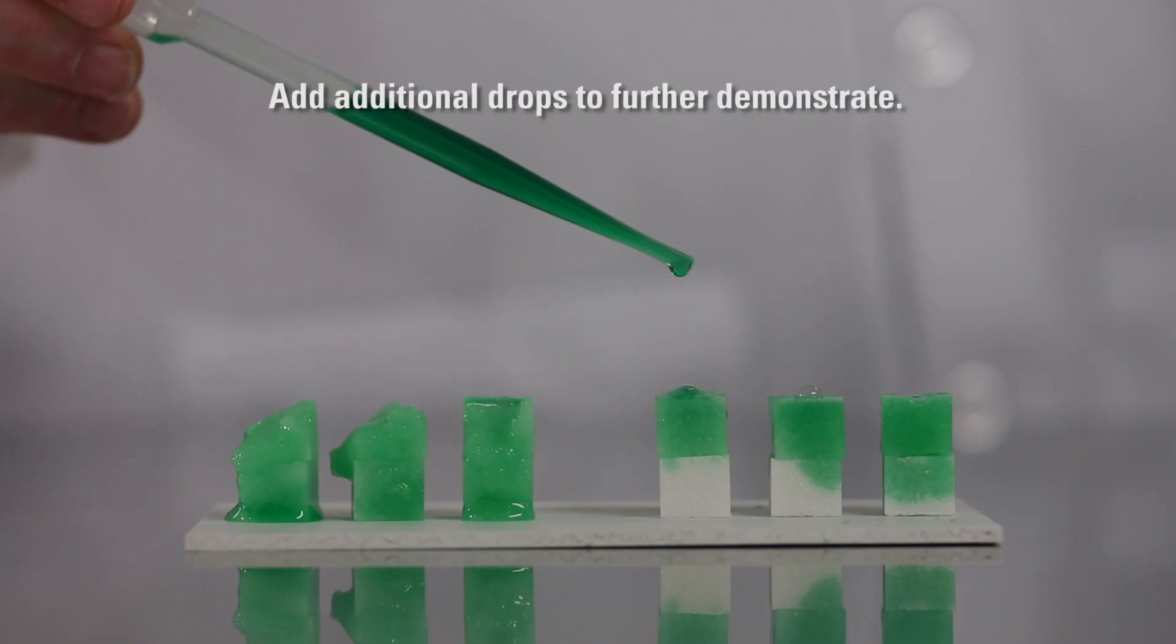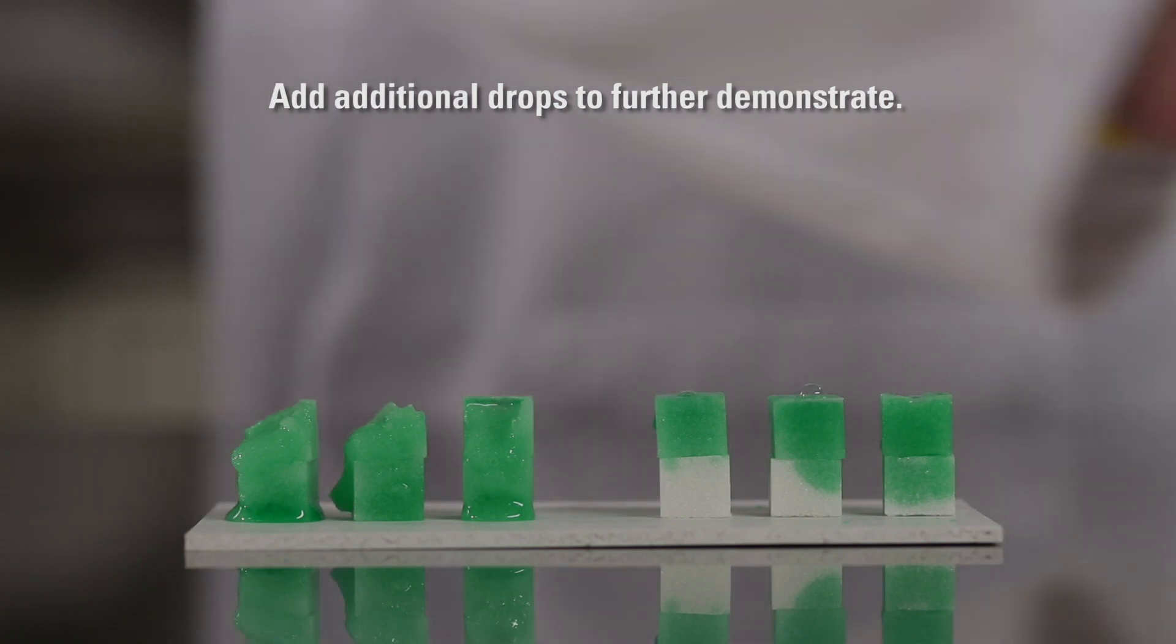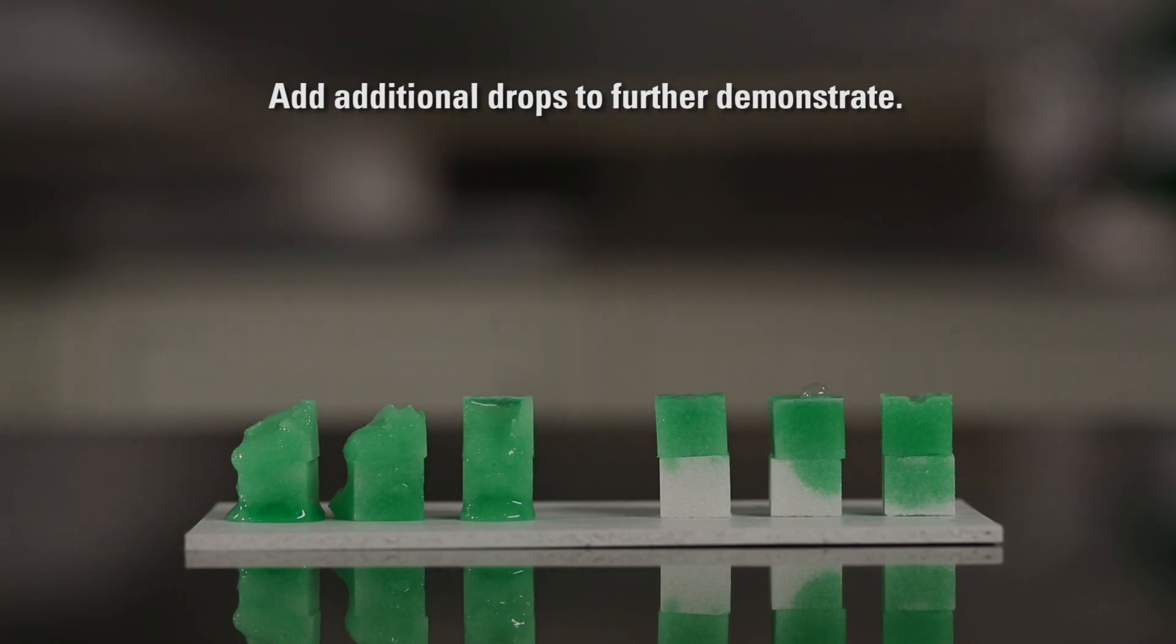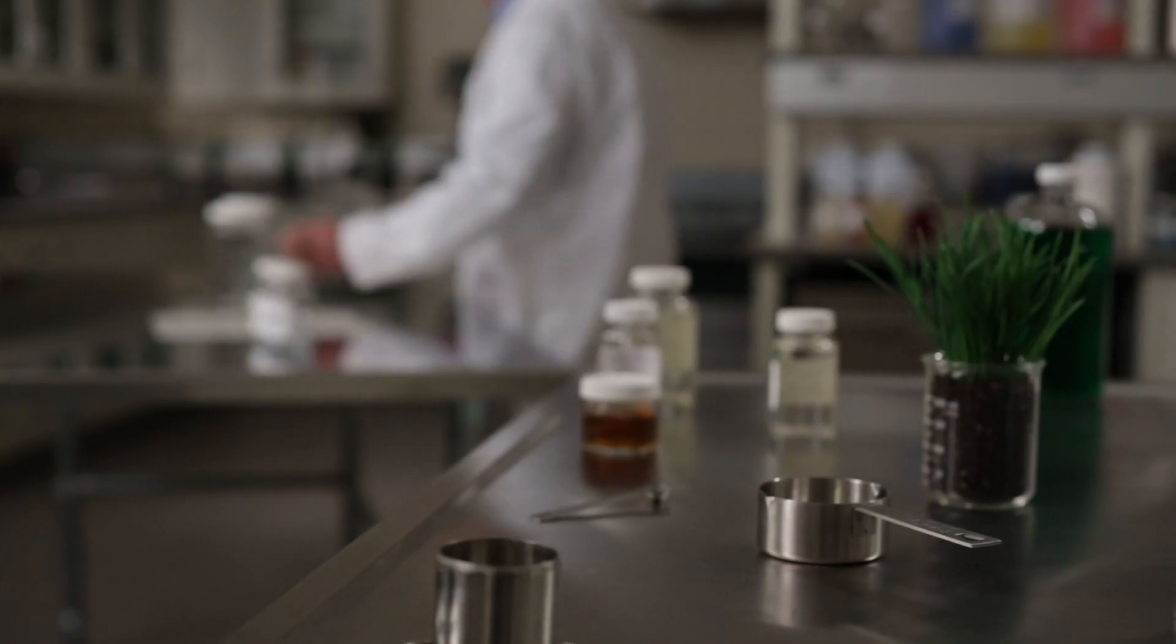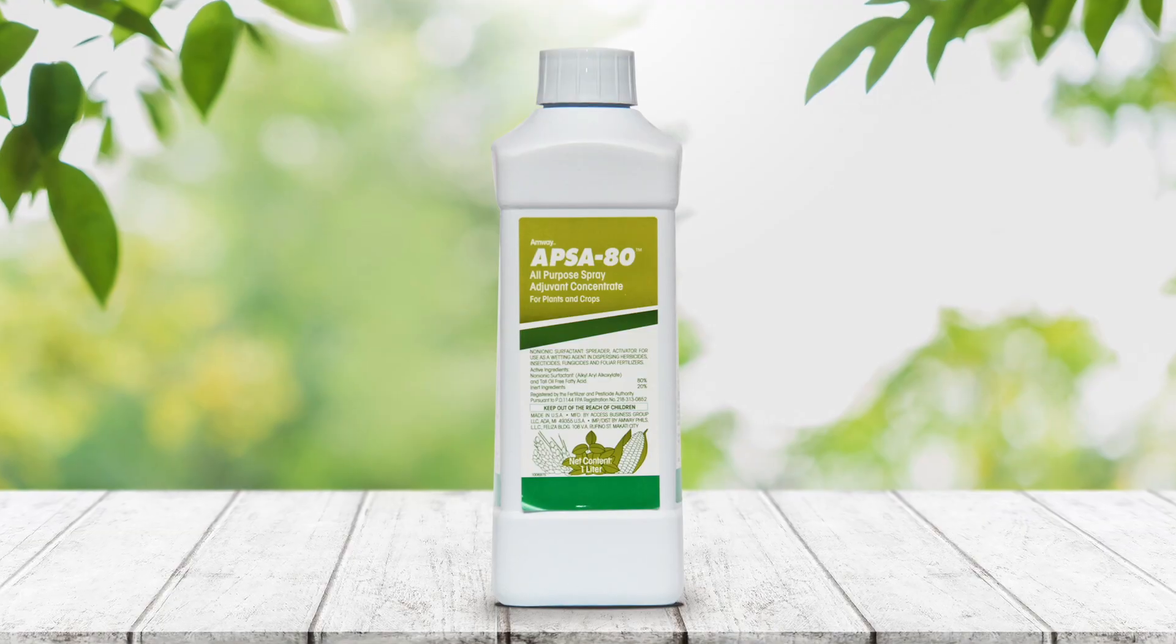Watch as we add more drops. The water without APSA 80 simply can't enter as many micropores so it flows down faster, exiting the sugar cube. This is similar to standard water exiting the root zone of vegetation without providing maximum moisture to the soil.